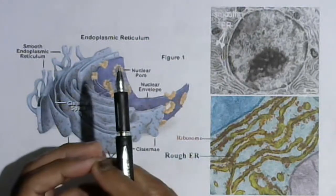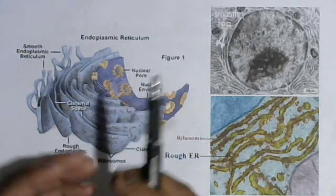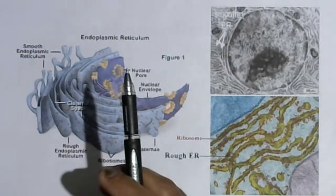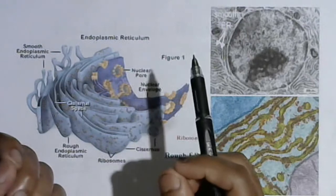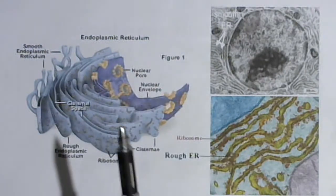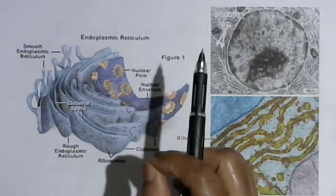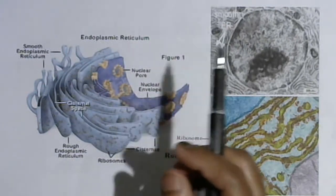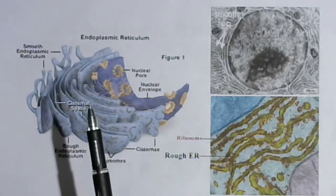Smooth endoplasmic reticulums are associated with synthesis of steroid-like hormones, lipids, and are found in lipid and steroid-secreting cells of our body. For example, cells like liver cells, adipose cells, interstitial cells, leukocytes, and the cells of the adrenal cortex where adrenocorticosteroid hormones are produced contain smooth endoplasmic reticulum.